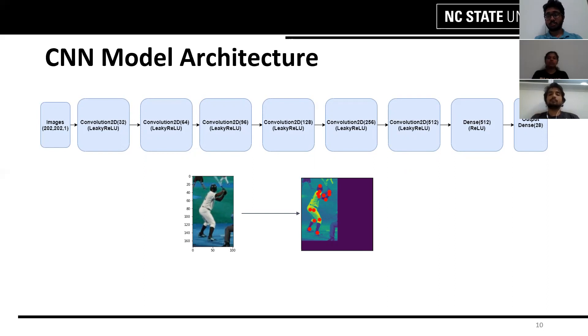These convolution layers are then connected to two fully connected dense layers of 512 units with ReLU activation. This dense layer is then connected to the final layer which is the output consisting of 28 units to give 28 outputs for 14 keypoints.